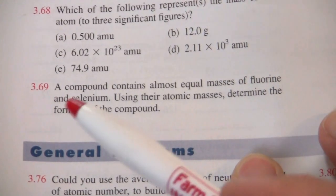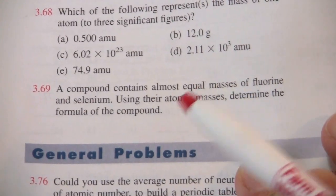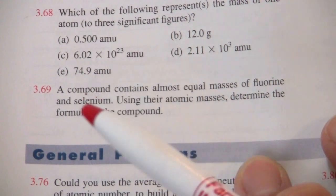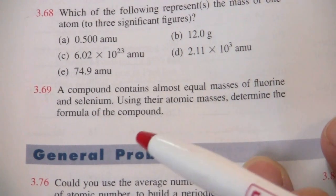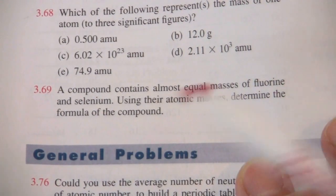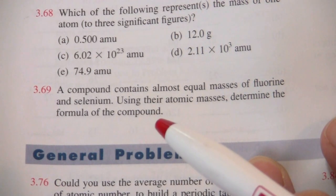Here's a problem. It says a compound contains almost equal masses of fluorine and selenium. Using their atomic masses, determine the formula of the compound.